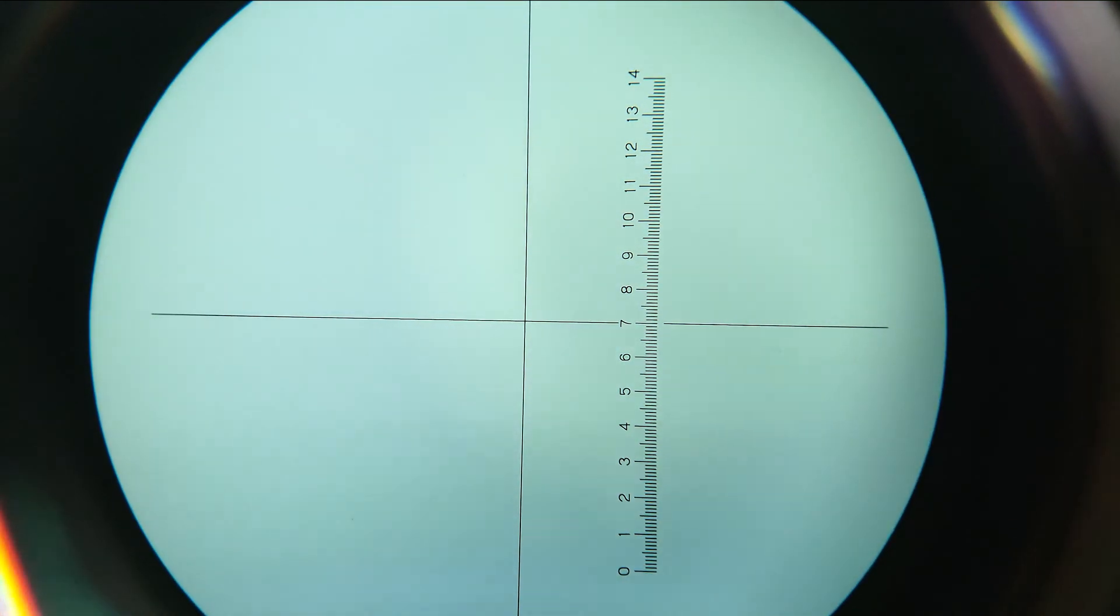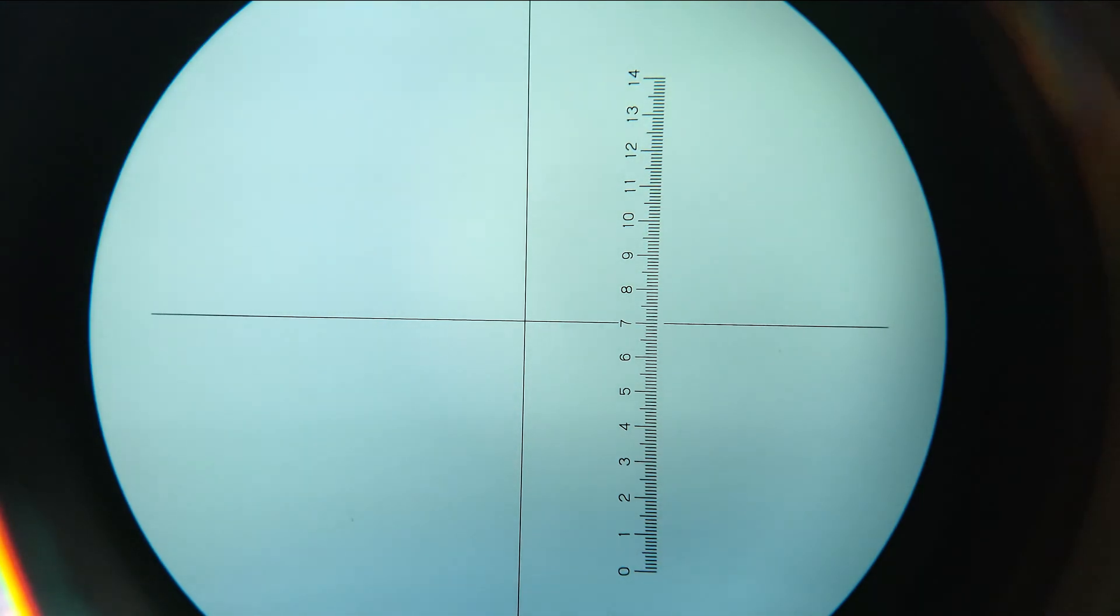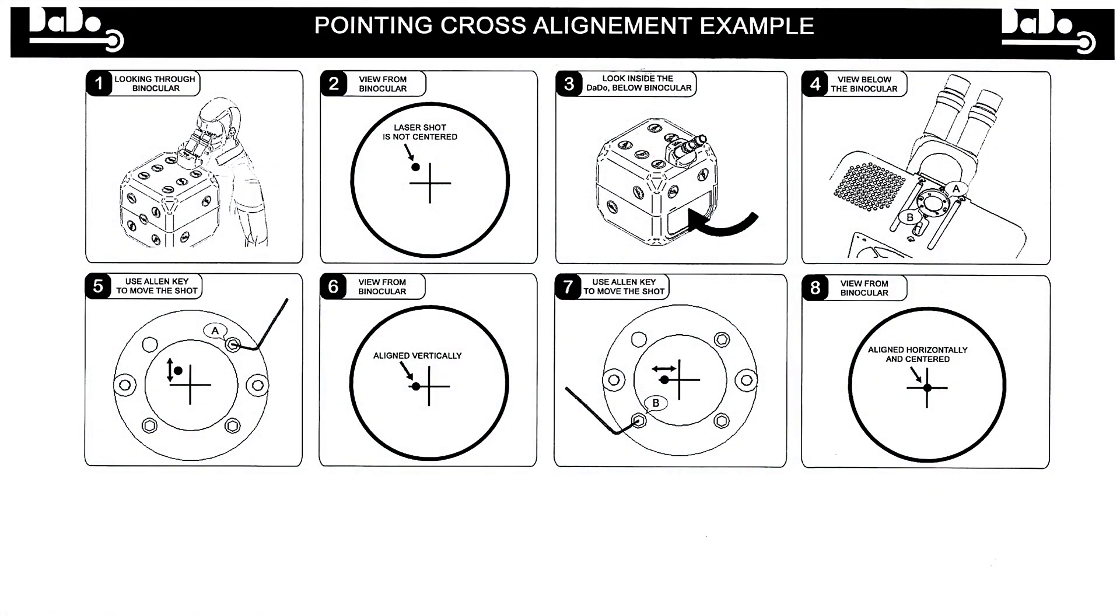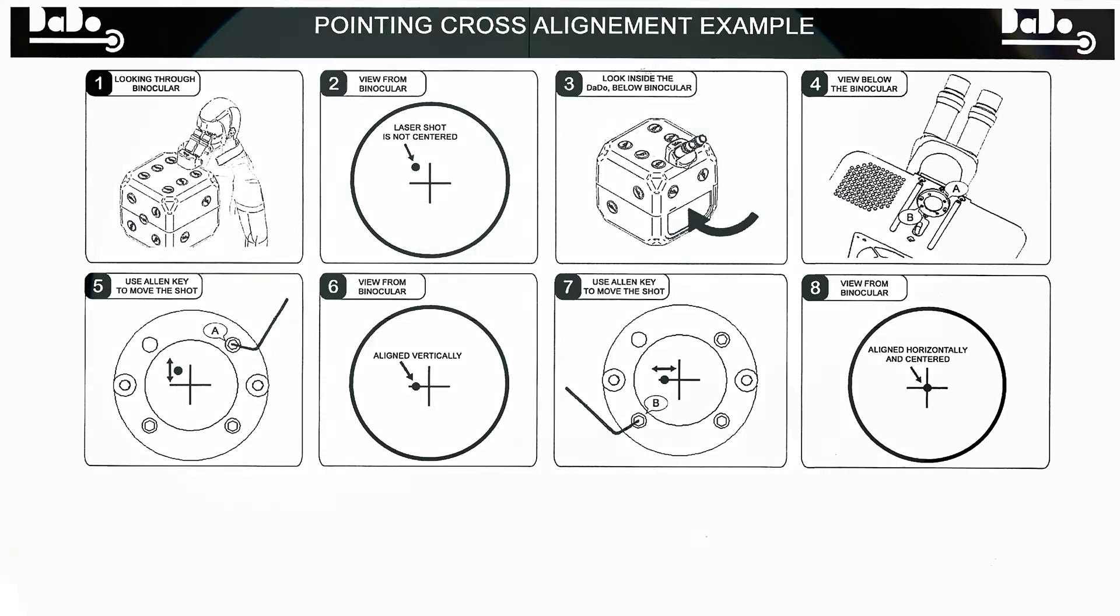The next thing that we're going to need is the three millimeter Allen key that came with our machine in order to adjust the crosshairs. So referencing our guide that came with the welder, we're going to be on the backside and it's labeled pointing cross alignment example. Now we're going to be referencing these images on here in the video so that it'll be easy to follow.